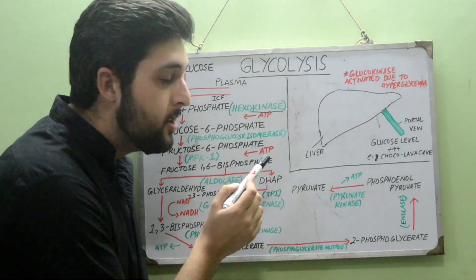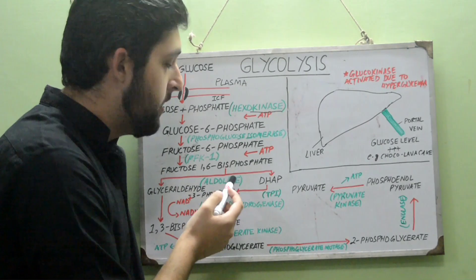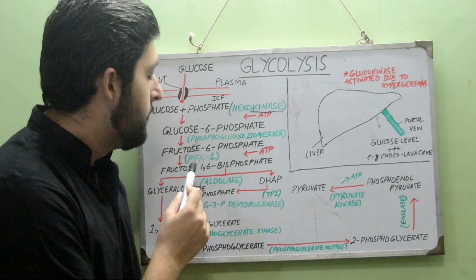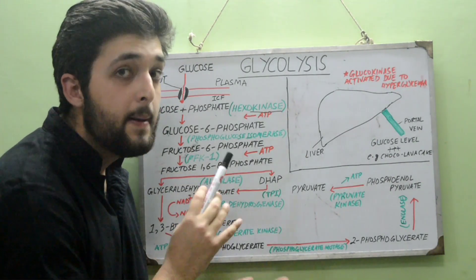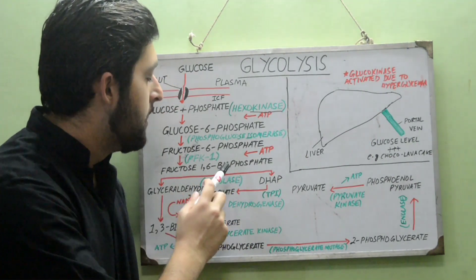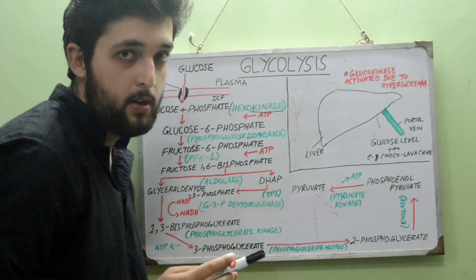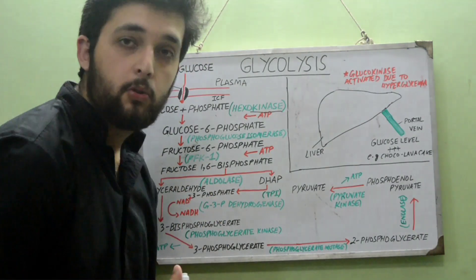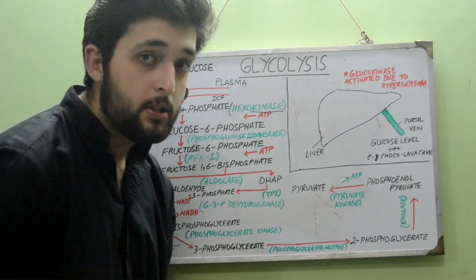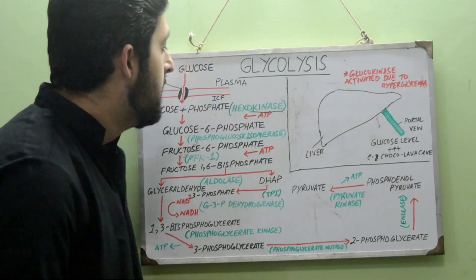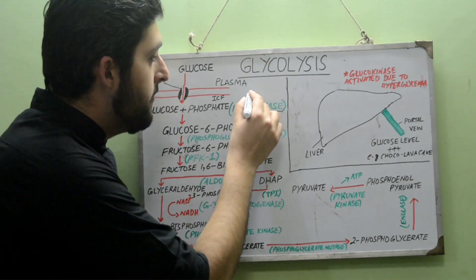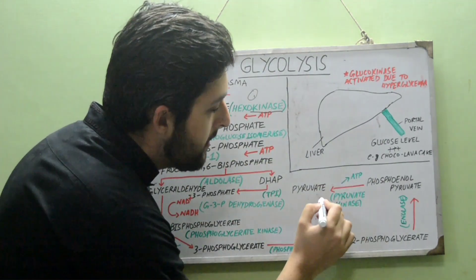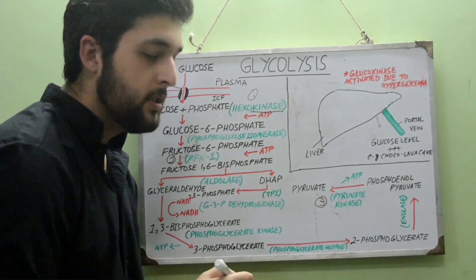Fructose-6-phosphate is again phosphorylated using ATP. We already had a phosphate on the sixth carbon; now we add another on the first carbon to form fructose-1,6-bisphosphate. The enzyme responsible is PFK1, or phosphofructokinase-1.